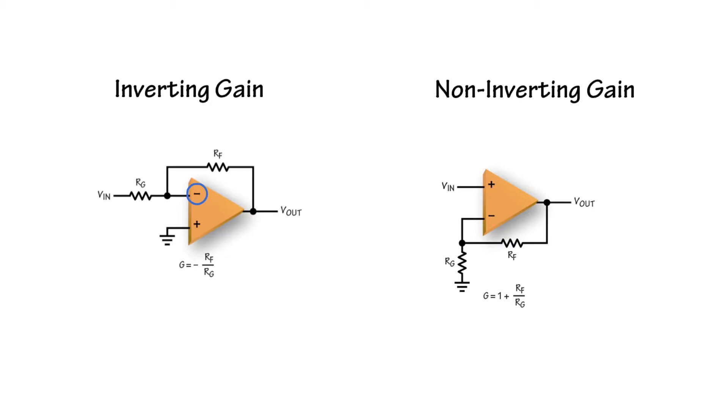Any current that flows through the input resistor must also flow through the output resistor. This creates a ratio between output voltage and input voltage equal to the resistor ratio, which gives us an inverting gain of Rf divided by Rg.